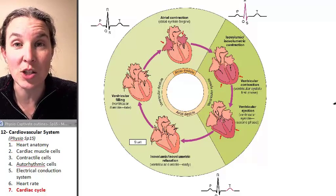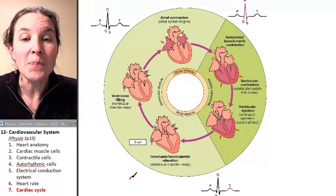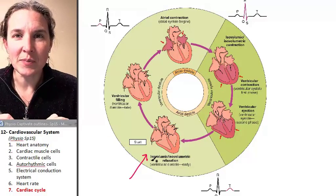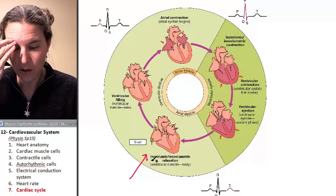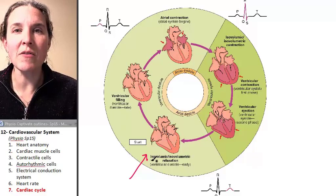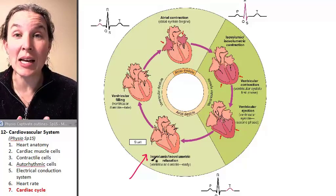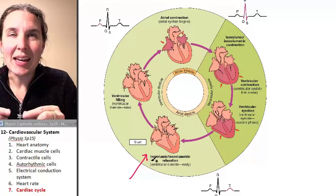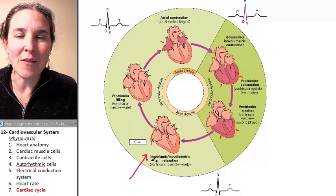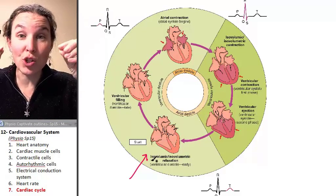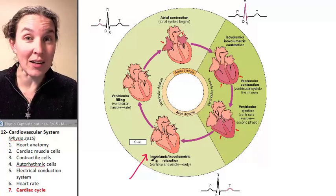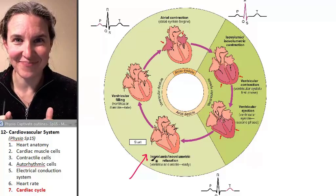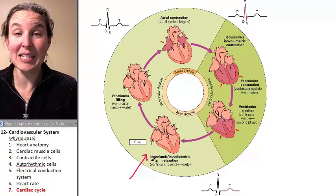Look at this picture — this is from your textbook. A complete cardiac cycle is the series of events that result in blood being pumped from the atria into the ventricles, and from the ventricles out to the body or the lungs and back into the atria again. We have a complete pathway.